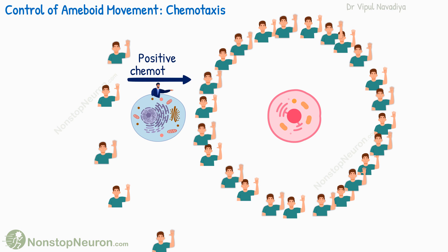The movement towards the source of the chemotactic substance is called positive chemotaxis. Sometimes the cell moves away from the source — that is called negative chemotaxis.